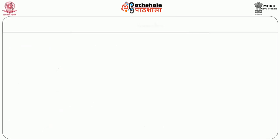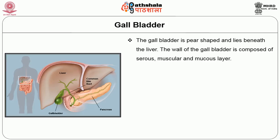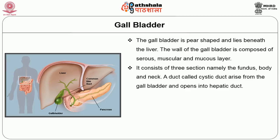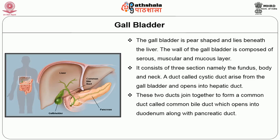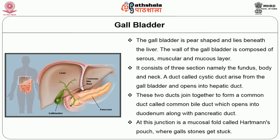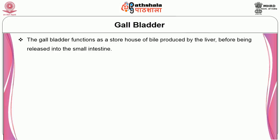The gallbladder is a pear-shaped organ that lies beneath the liver. Its wall is composed of serous, muscular, and mucous layers, and it consists of three sections: the fundus, body, and neck. A duct called the cystic duct arises from the gallbladder and opens into the hepatic duct. These two ducts join together to form the common bile duct, which opens into the duodenum along with the pancreatic duct. At this junction is a mucosal fold called Hartmann's pouch, where gallstones can get stuck. The gallbladder functions as a storehouse for bile produced by the liver before it is released into the small intestine.